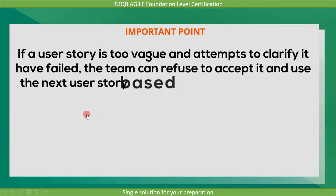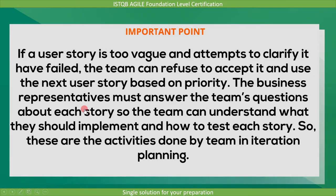Now let's go through some important points. If a user story is too vague and attempts to clarify it have failed, the team can refuse to accept it and use the next user story based on priority. The business representatives must answer the team's questions about each story so the team can understand what they should implement and how to test each story.